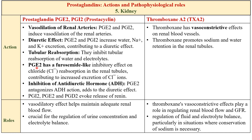Prostaglandin E2 has a furosemide-like inhibitory effect on chloride reabsorption in the renal tubules, contributing to increased excretion of chloride ions. Additionally, prostaglandin E2 antagonizes antidiuretic hormone (vasopressin). Vasopressin normally acts on the kidney to increase water reabsorption and reduce urine output; by inhibiting this antidiuretic hormone, prostaglandin E2 further promotes water excretion and contributes to its diuretic effect. On the other hand, thromboxane A2 has a vasoconstrictive effect.